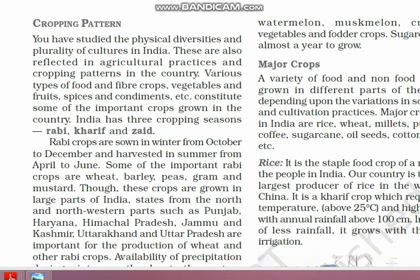Welcome students. Last session we discussed types of agriculture. Now in this video we will discuss the cropping pattern — a topic we have already covered in previous classes. India is a very varied land with vast diversity, and along with physical and cultural diversities, India also maintains diversity in agriculture through different cropping patterns. Various types of food and fiber crops, vegetables, fruits, spices, and condiments constitute some of the crops grown in the country. Condiments are special spices added to food to enhance flavor, like jeera powder, dhania powder, and garam masala.